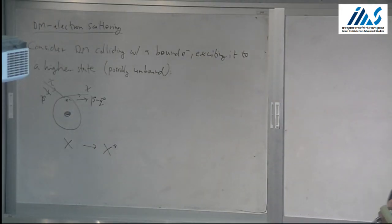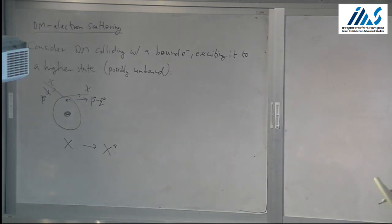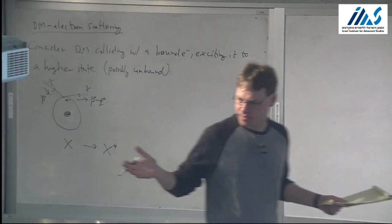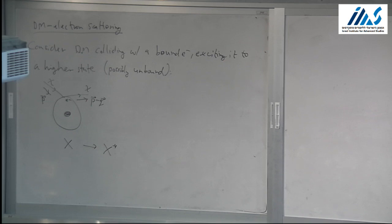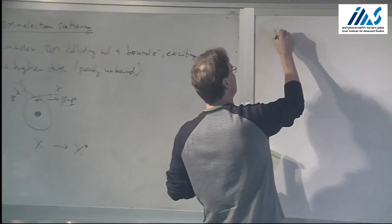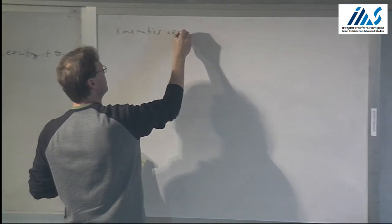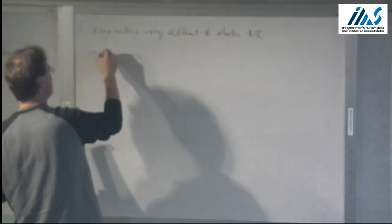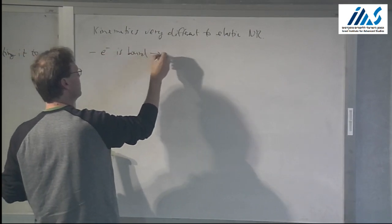The kinematics for this are very different than the kinematics for elastic nuclear recoils. First of all, the electron here is in a bound state — what can you tell me about its momentum? The typical momentum is Z·alpha — so there's a spread of momentum. The electron is in a bound state so it has a fixed energy, but it doesn't have a fixed momentum. That's important.